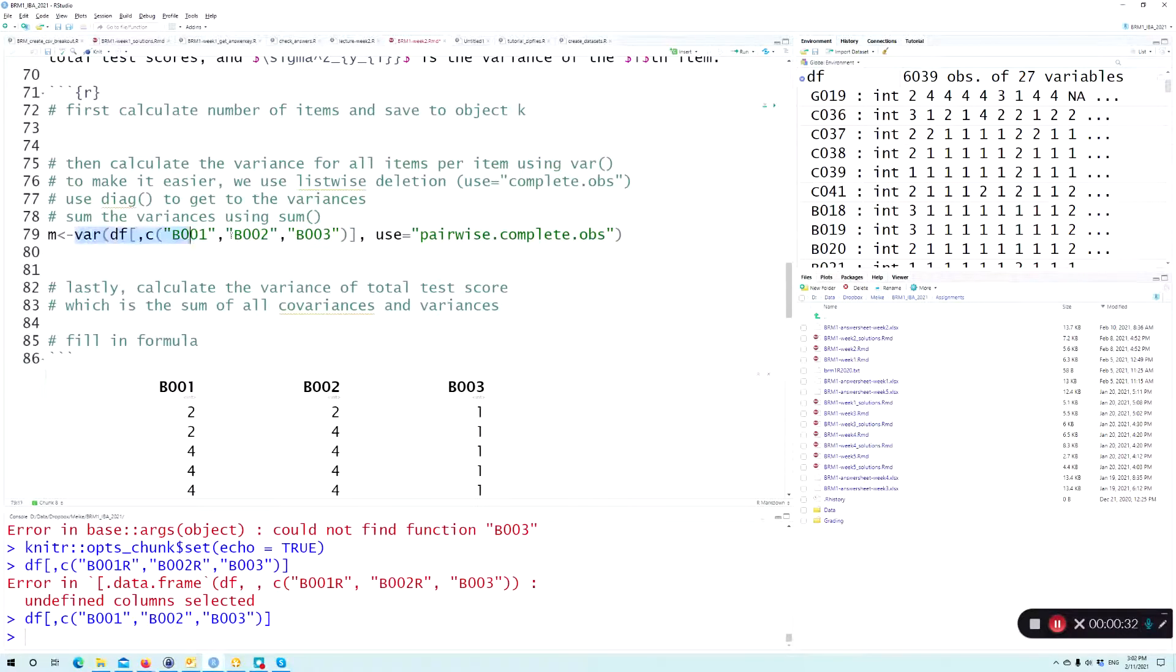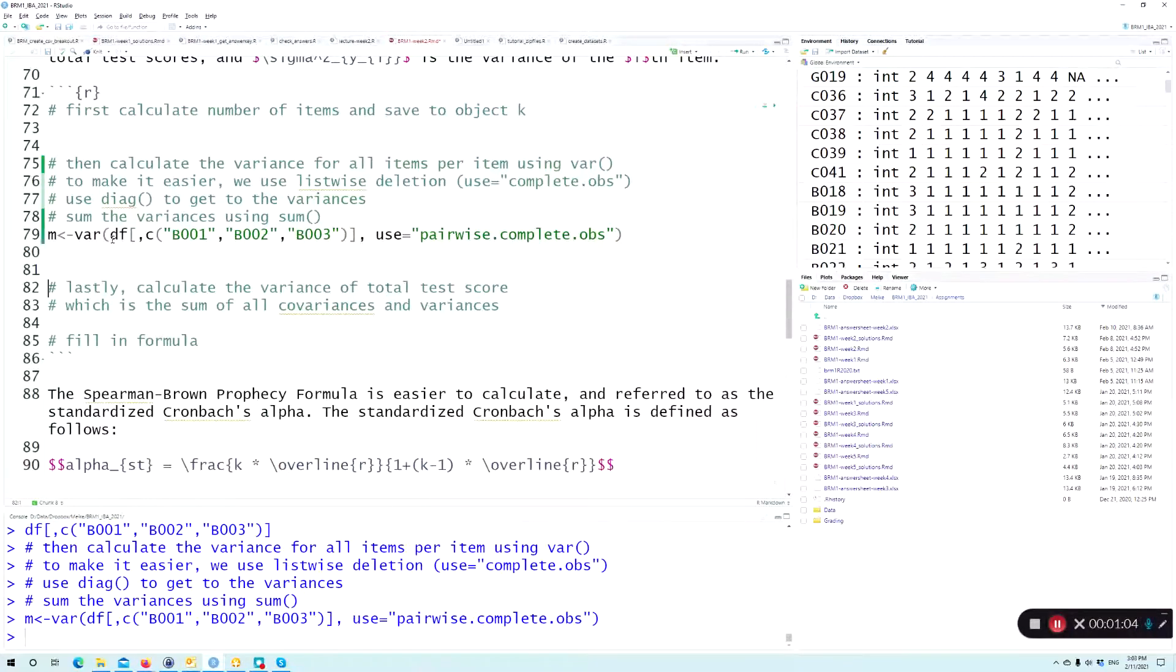I'm going to create a variance covariance matrix based on pairwise solution. Now pairwise means that if this person would have an NA here, it would still count in the correlation between these two items, two and three, but not between one and two because obviously it would have a missing on one. Listwise solution means that you would delete this person from the whole data set from all the calculations, all the correlations. So I'm going to use pairwise solution.